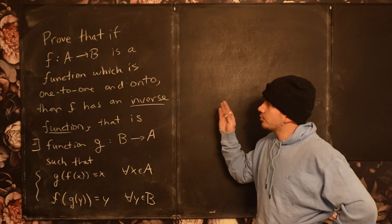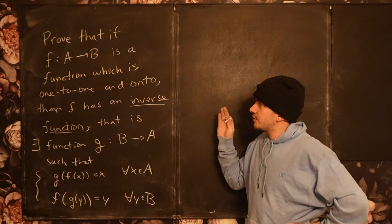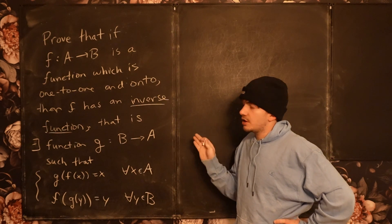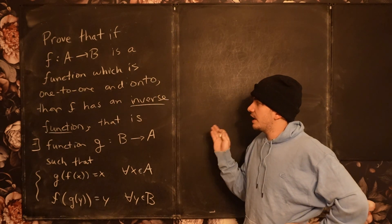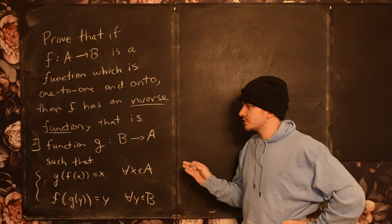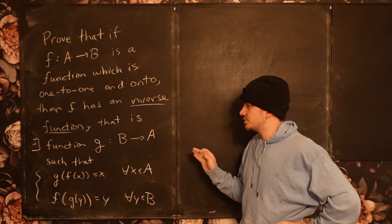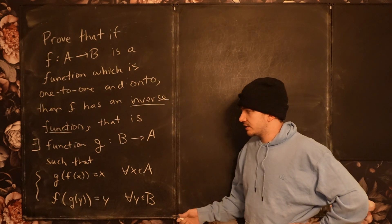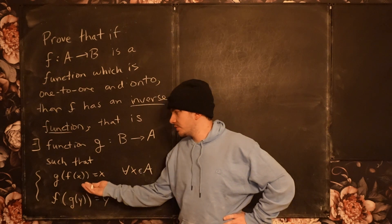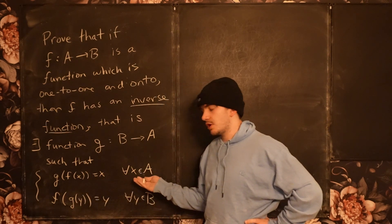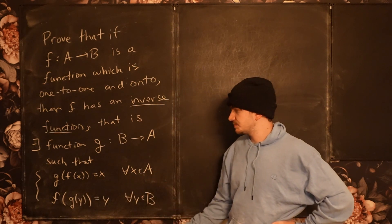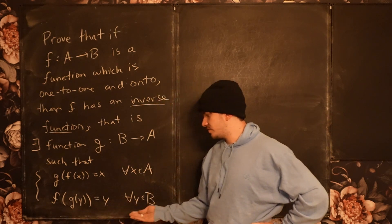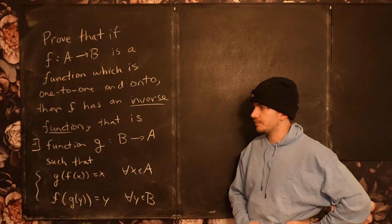Today we have a theorem. Prove that f, a function from A to B, is a function which is 1-to-1 and onto. Then f has an inverse function. That is, there exists a function g from B to A such that g composed with f of x is equal to x for all x in A, and f composed with g of y is equal to y for all y in B.